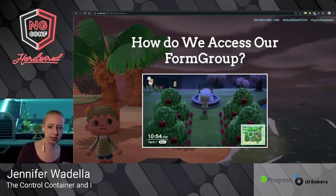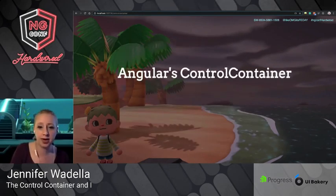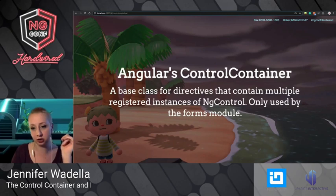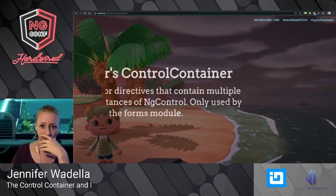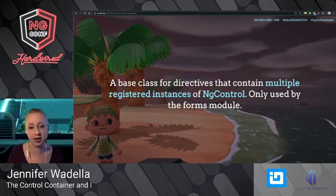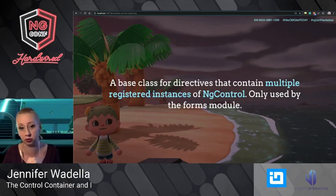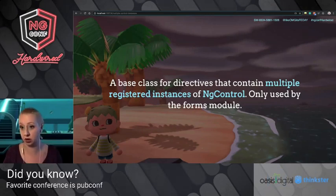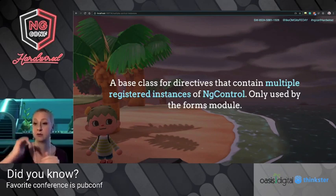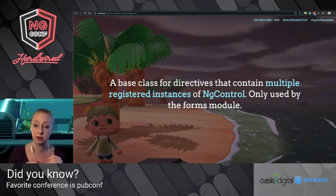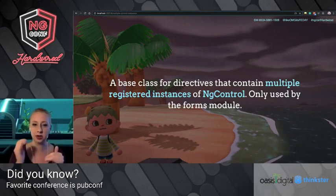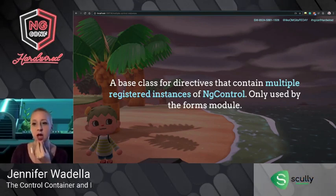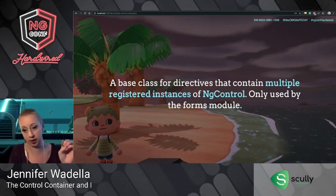There's a really great class available in Angular called the ControlContainer. It's a base class for directives that contain multiple registered controls — used by FormGroup. So a directive has multiple controls inside of it: our FormGroup is created, and inside of it we have a FormControl for each piece of data. ControlContainer will walk up the DOM tree and look to find a directive that has those multiple registered instances — that's how we access our FormGroup directive from wherever we are.